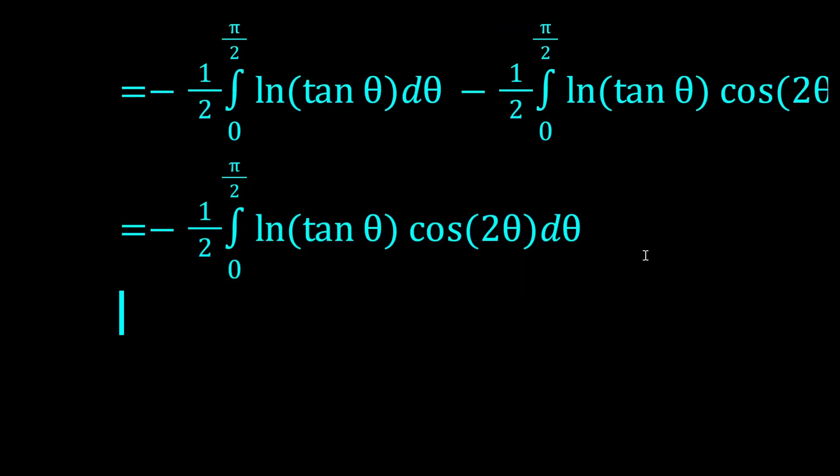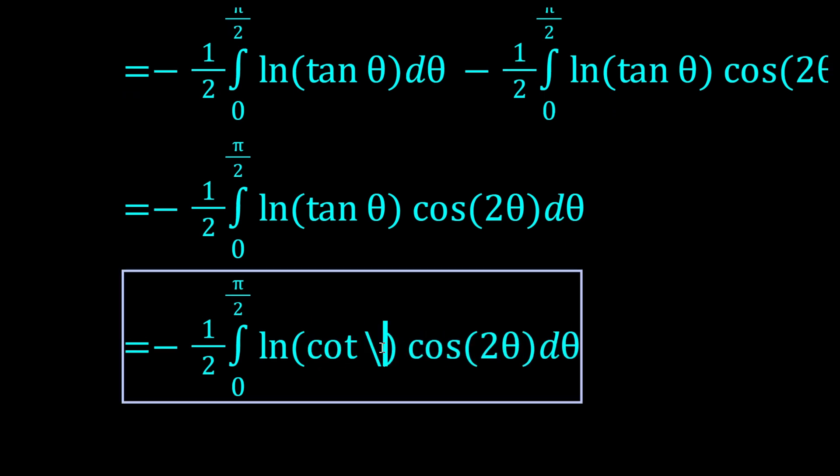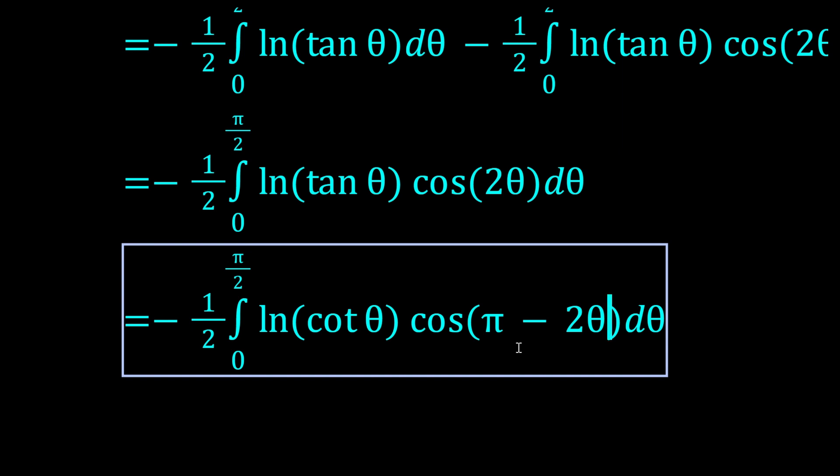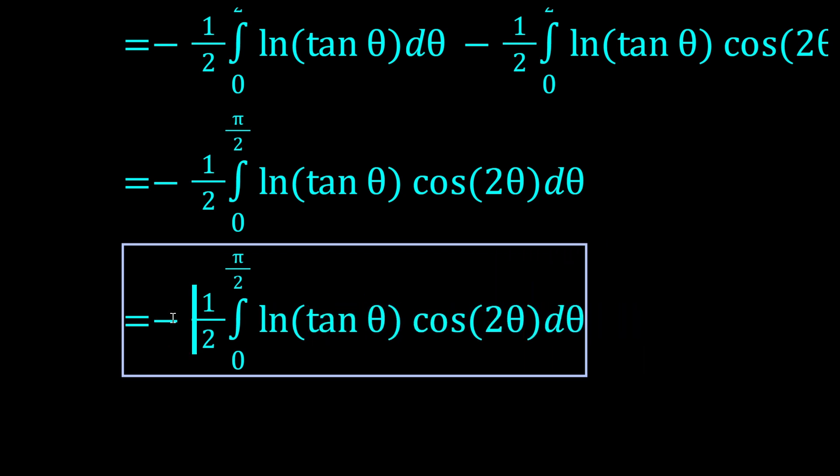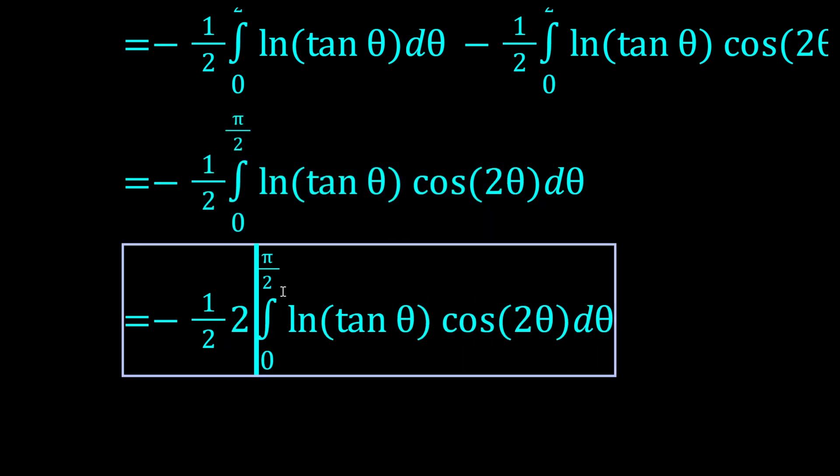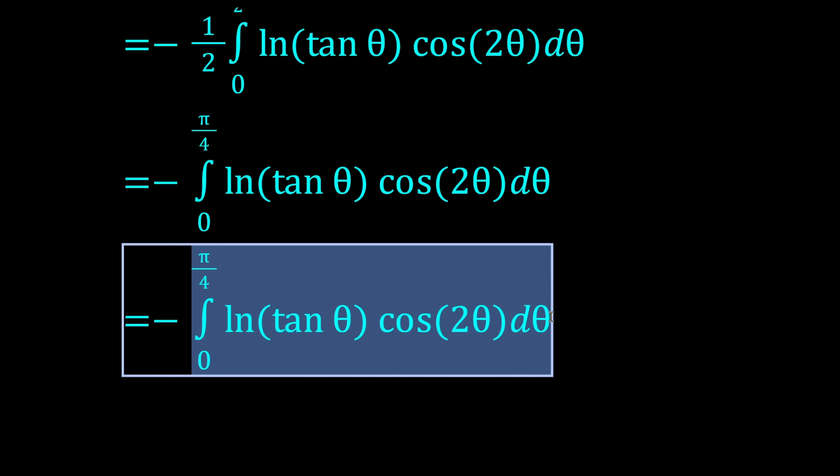Now we have this left. We could try King's rule again and see what happens. If we do King's rule, we get cot θ in here, and this would become cos(π - 2θ). Now cos(π - 2θ) is minus cos 2θ, and log cot is minus log tan. Okay, wait. King's rule didn't do anything. So that means the integral is symmetric about the midpoint. So it's actually twice the integral from 0 to π/4. If you want to know why that kind of works, I have a video on this. Check it out in the description.